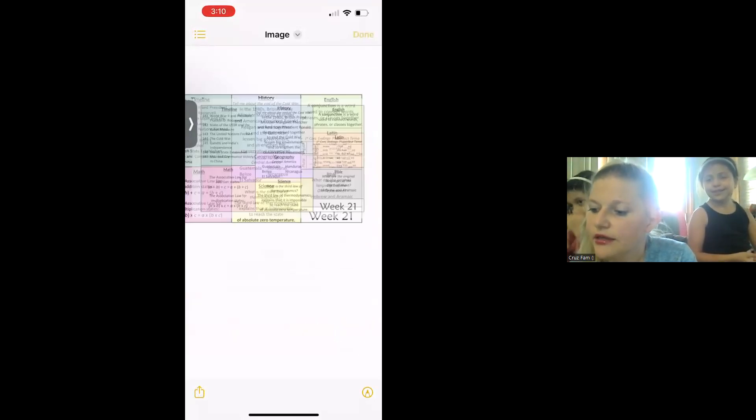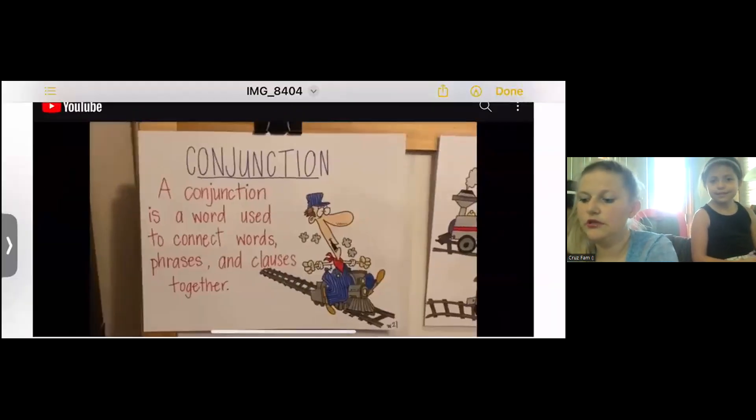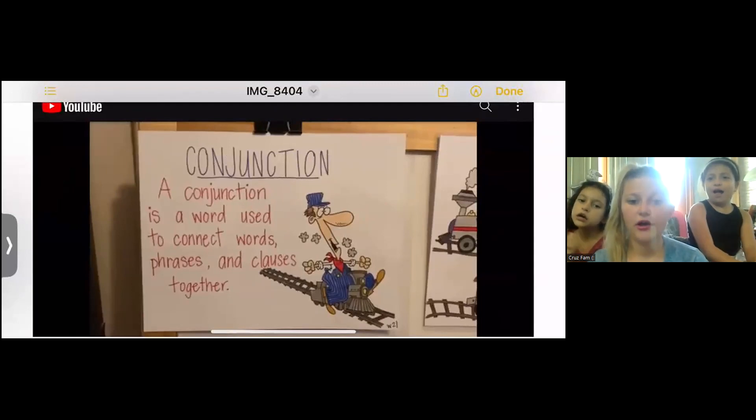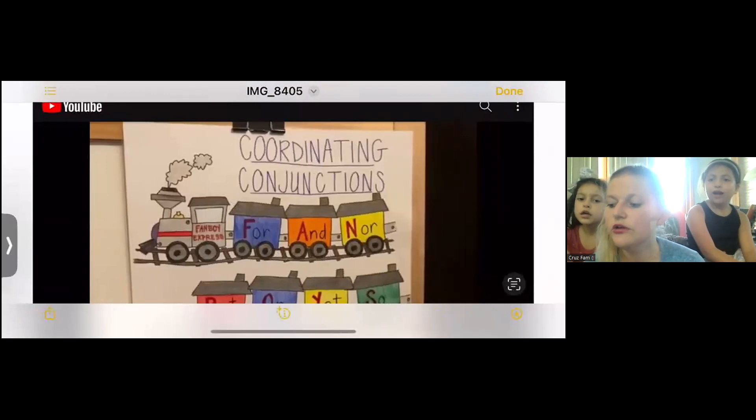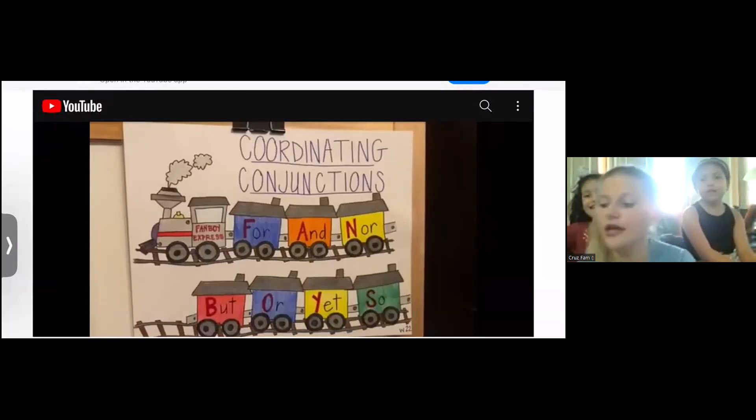English. We love these images to the tune of I've Been Working on the Railroad. A conjunction is a word used to connect words, phrases, and clauses together. Coordinating conjunctions: for, and, nor, but, or, yet, so.